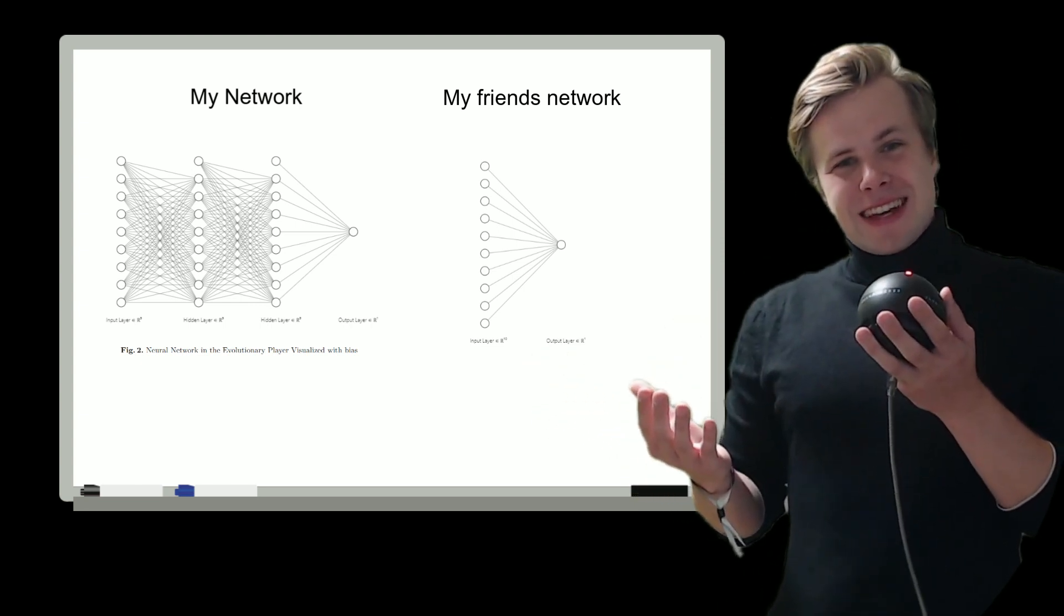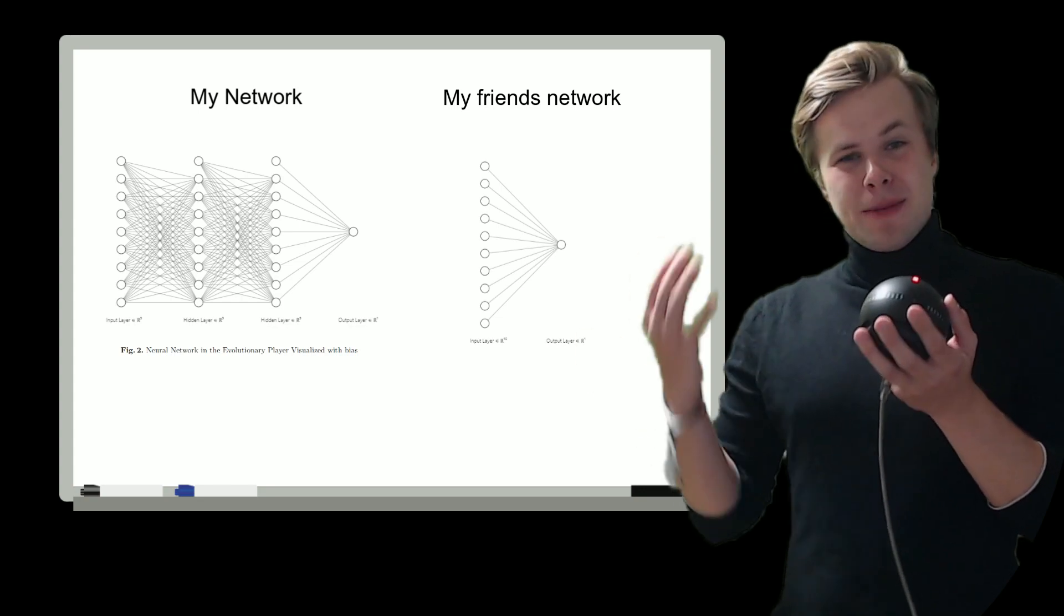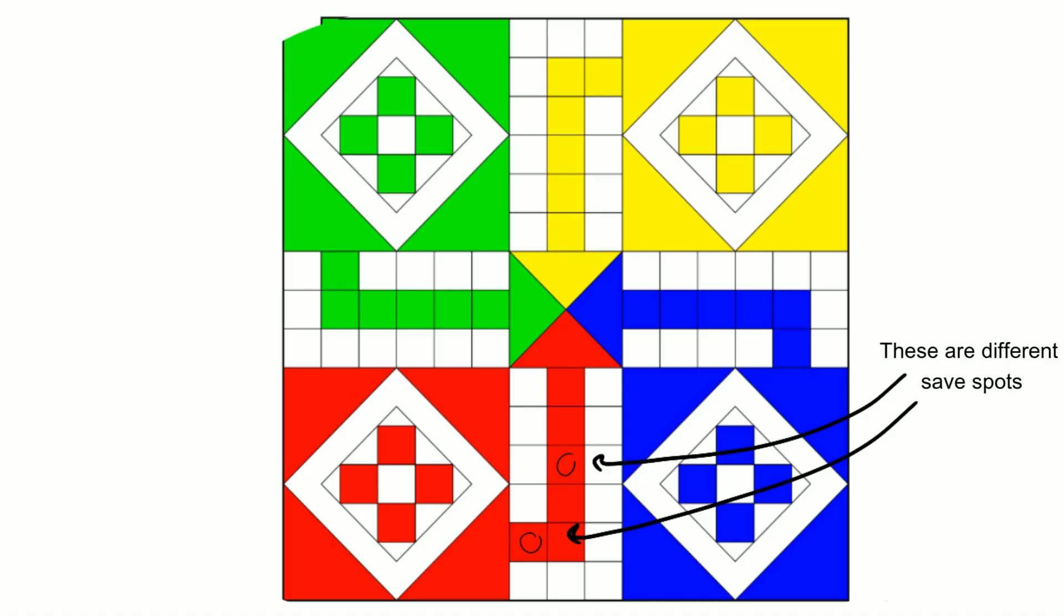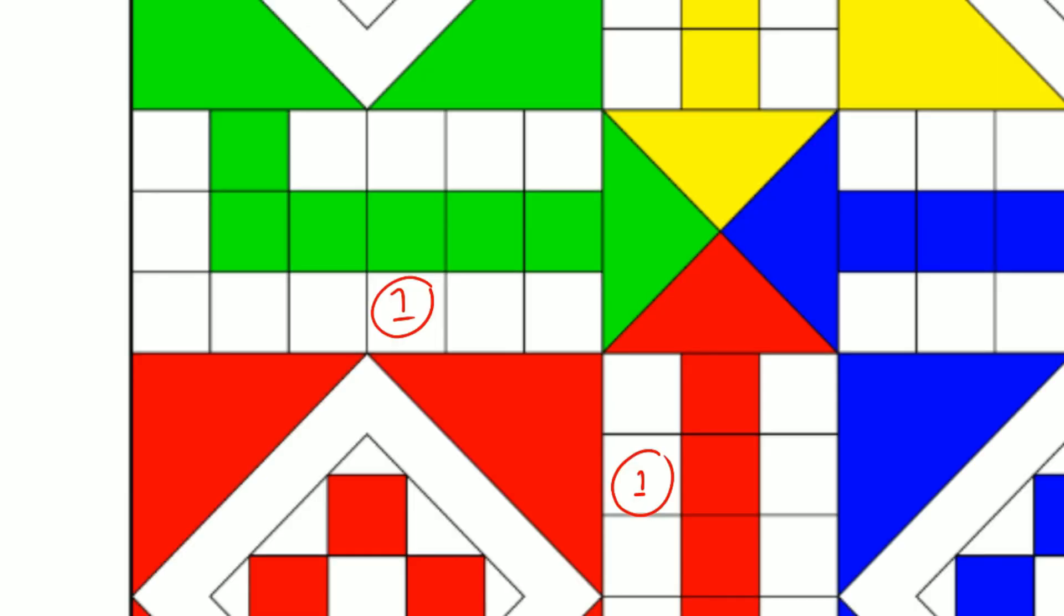The other thing is that she accounts for two things in her inputs that I simply forgot. One of them is to account for the difference between being safe in the home area and being safe in the end area, which of course you would use different strategies to deal with. Another one is the fact that if two pieces stack on top of each other then they are also a safe area, which I completely forgot.